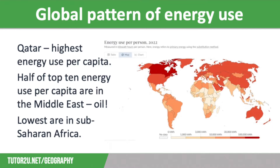Let's have a quick look at the global pattern of energy use. Energy supply and consumption are unequal across the globe, as you can see from our World in Data map on the screen. Qatar has the highest energy use per capita, with an average of 194,222 kilowatt hours per year. 100% of energy in the country is generated through burning fossil fuels. Half of the top 10 energy-consuming countries are from the Middle East, including the United Arab Emirates, Kuwait, Saudi Arabia and Oman.